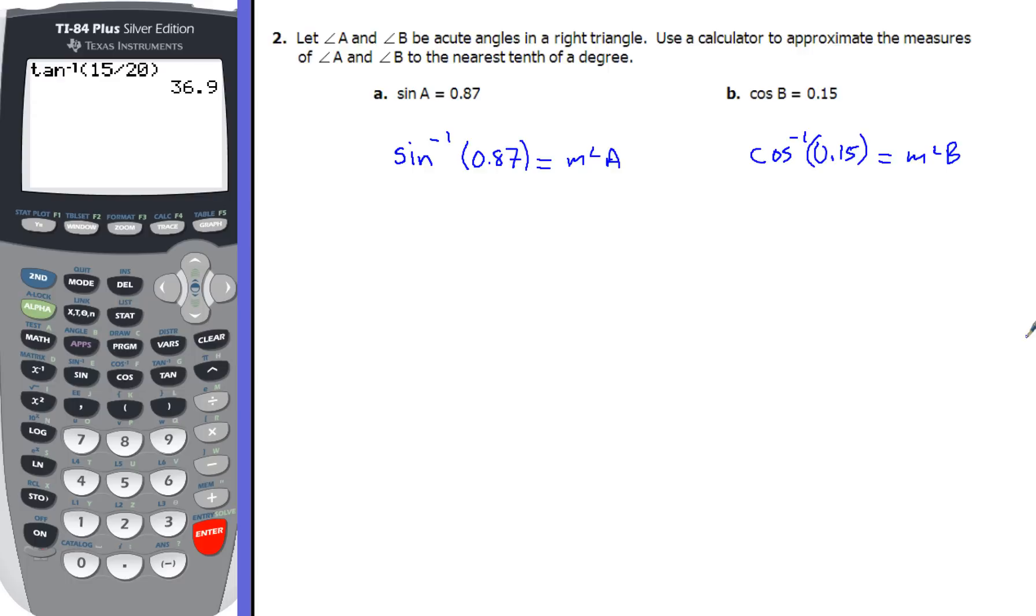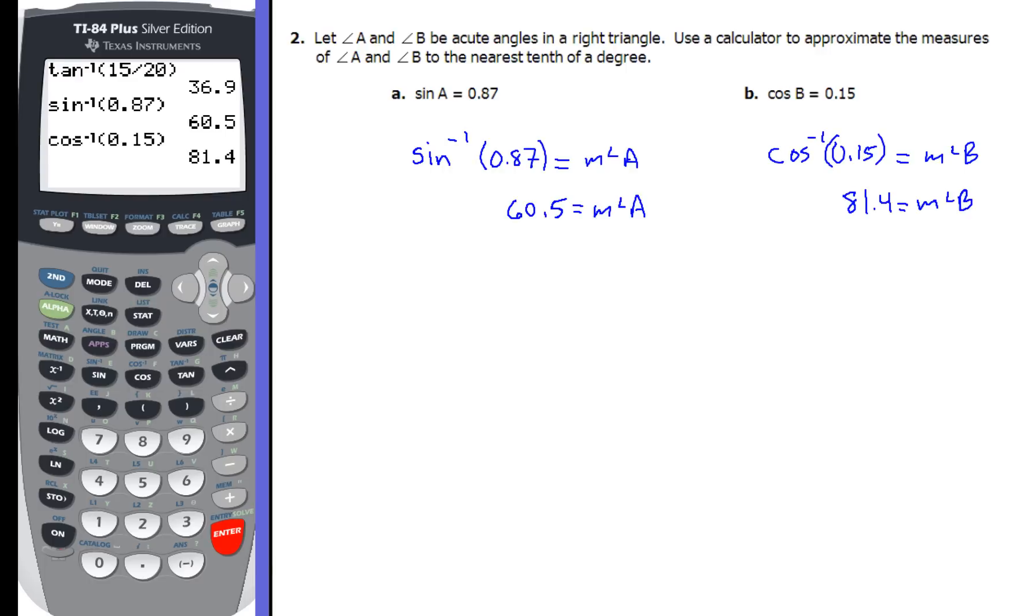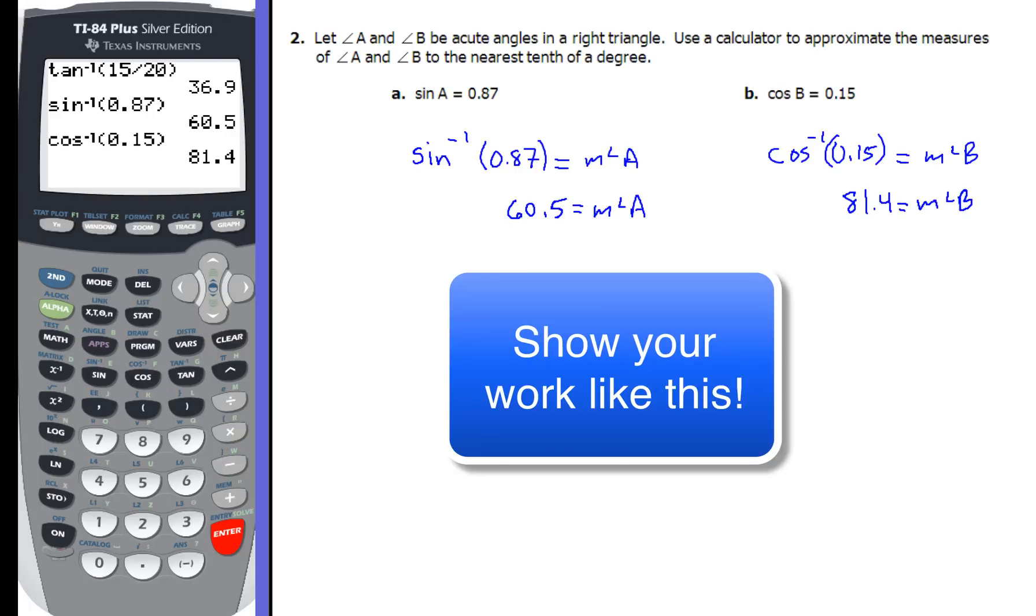Again, we're rounding to the tenth place, which our calculator was nice enough to set up for us. So how'd you do with that? Hopefully, you got the same values I did. If not, be sure to double check your mode and make sure you're in degree mode and your calculator is set to round to the nearest tenth of a degree, as you can see on the left-hand side where the graphing calculator is displayed. And that's it for example two. Pretty easy stuff. But I want you to make sure that you show your writing so it looks just like it is on the screen.